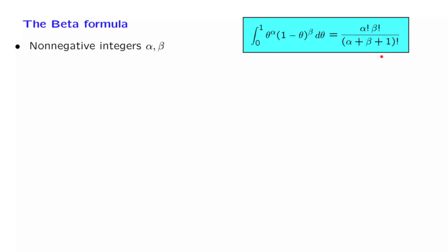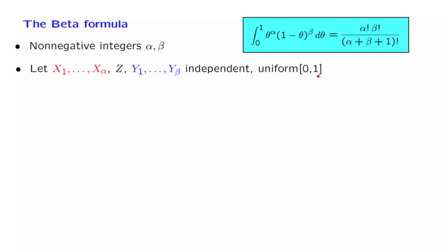What we will do is consider the following setting. We start with alpha plus beta plus 1, that many independent random variables that are uniform on the unit interval. And we will consider the following event and its probability. This is the probability that these random variables happen to be ordered in some particular order. Let us call this event A.